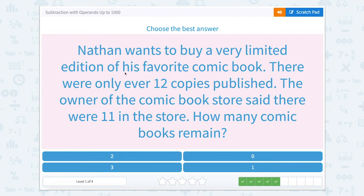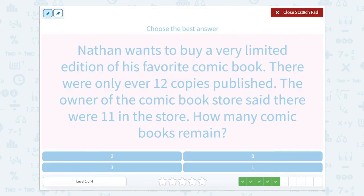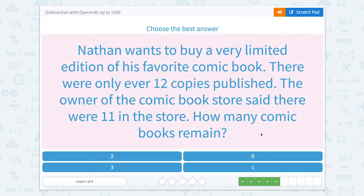Nathan wants to buy a very limited edition of his favorite comic book. There were only ever 12 copies published. The owner of the comic book store said that there were 11 in the store. How many comic books remain? Let's find out how many total copies were published. Right here it tells us that there were 12 copies published. So 12. And in the store, there's 11. So if there's 11 in the store, we could do 12 minus 11. And 12 minus 11 equals one. So there's one book remaining.